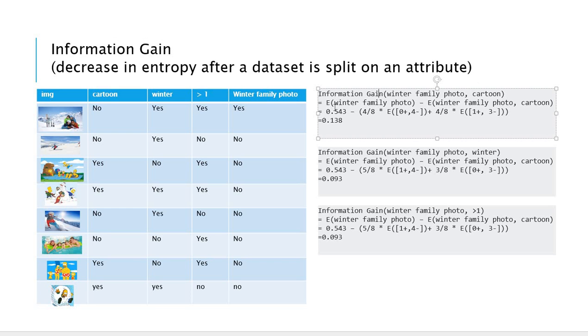Here you can see the example. We already know the entropy of the base status and we are going to do the minus here. Entropy of when we select the cartoon as a first attribute. So 0.543 we already know this value from the previous page and going to do minus here.